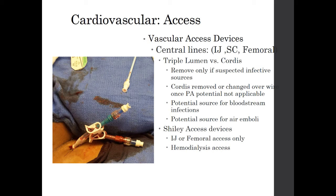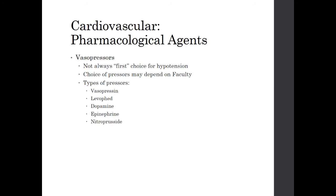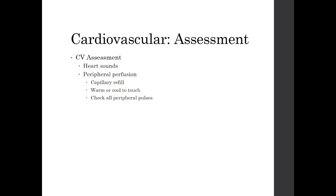Pharmacological agents include vasopressors, which are not always the first choice for hypotension — fluids and blood products usually are. The choice of pressors may depend on the facility or attending. Types include vasopressin, levophed, dopamine, epinephrine, and nitroprusside. Cardiovascular assessment should include asking the nurse about heart sounds, rate, rhythm, peripheral perfusion including capillary refill, warm or cool to touch, and peripheral pulses.